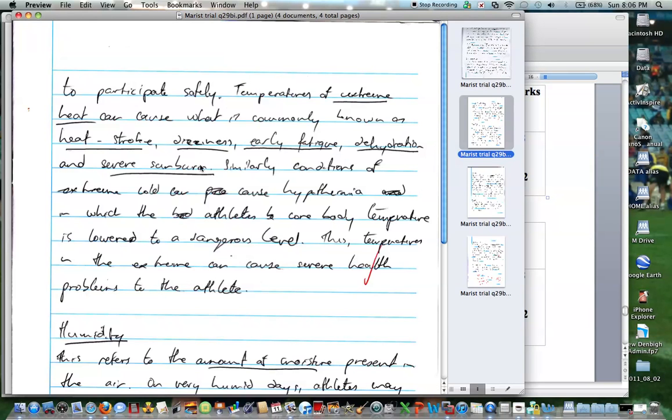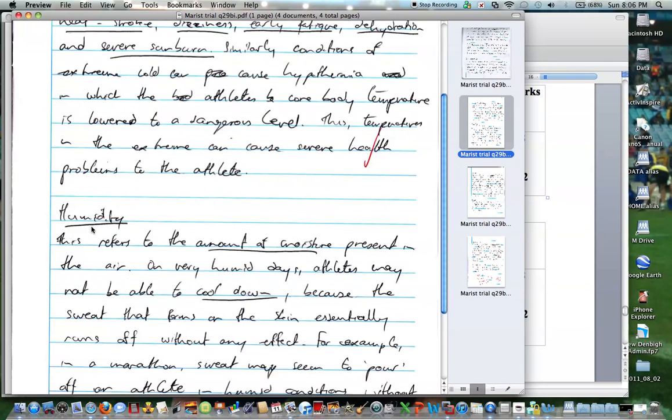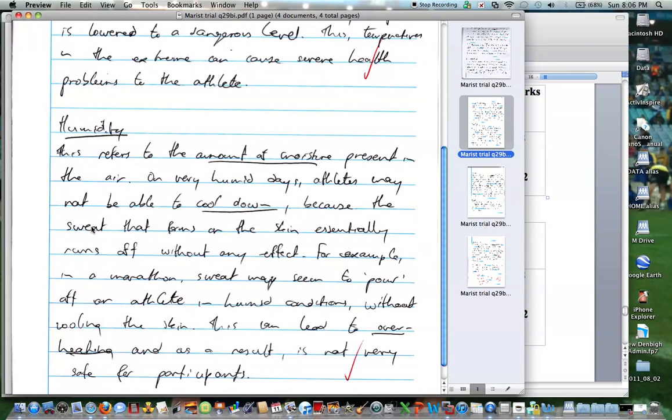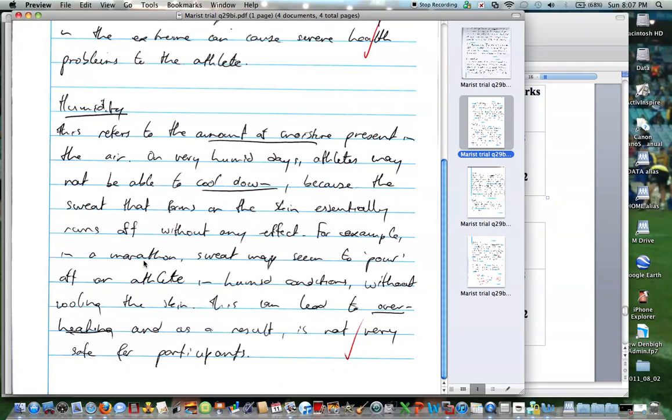We go to our next page, continues, and it comes back to the question, talks about participation safely. Goes into humidity, gives some information, and again, relates some examples in a marathon. And so he's gone through and spoke about humidity. He's given an example to support humidity, but what he's also done is then he's tied it back in to the question. This can lead to overheating, and as a result, is not very safe for participation. So that's talking about the issues that relate to it, if it continues in that environment, being humidity.